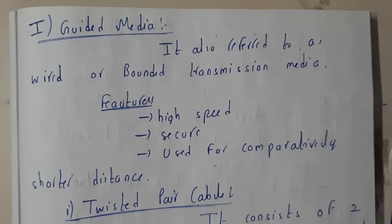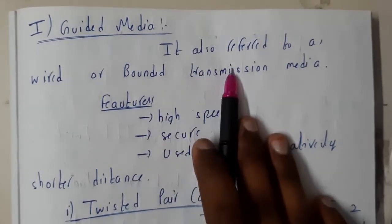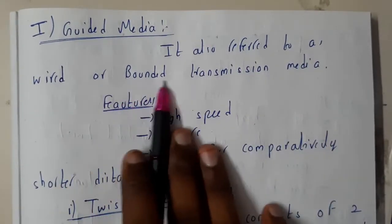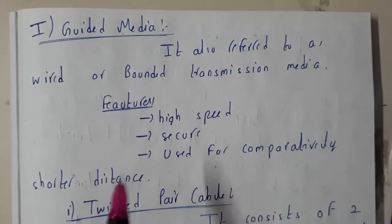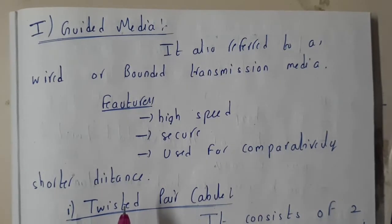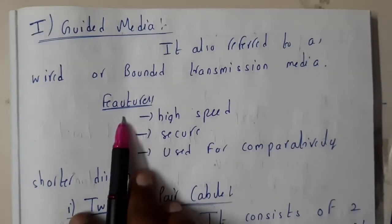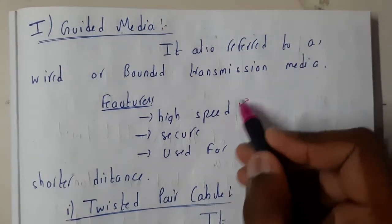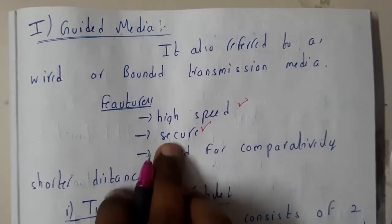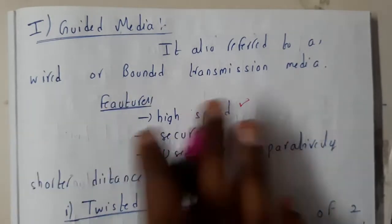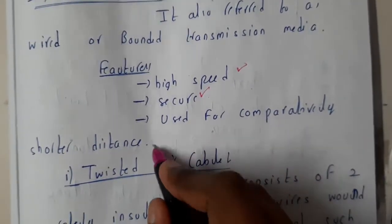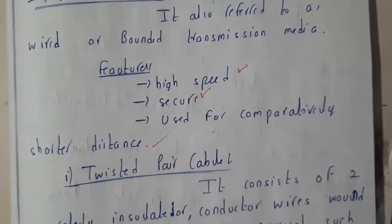Guided media is also referred to as wired or bounded transmission. Its key features are: high speed, high security — guided media is more secure than unguided media — and it is used for comparatively shorter distances, which is a relative disadvantage.